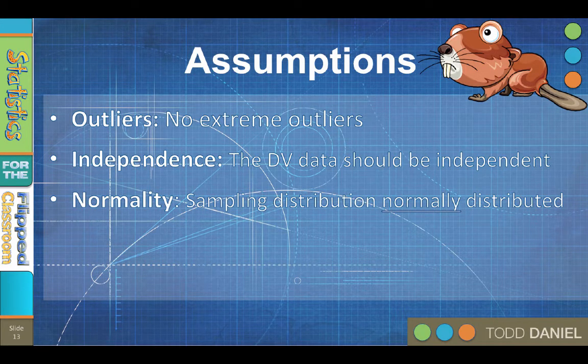The sampling distribution of the dependent variable should be normally distributed, so the dependent variable should be drawn from a population whose sample means are normally distributed. Assuming the other assumptions are met, this is not an issue, especially if your sample size is greater than 30.